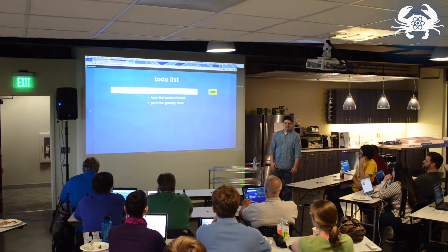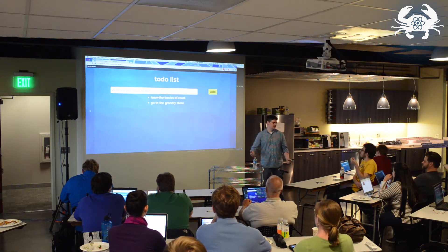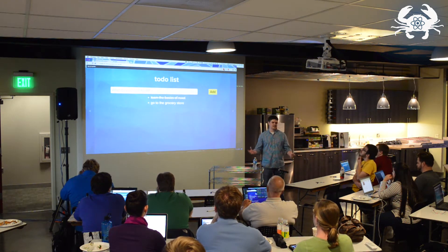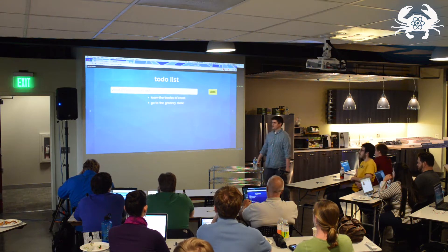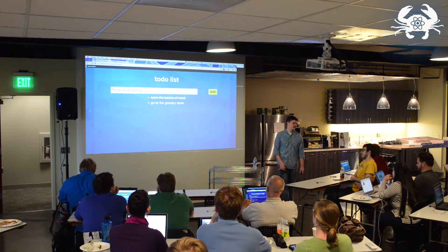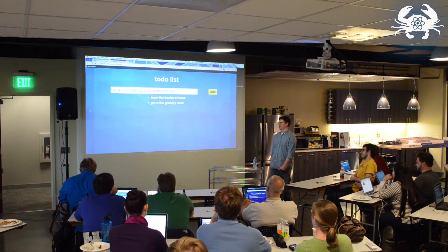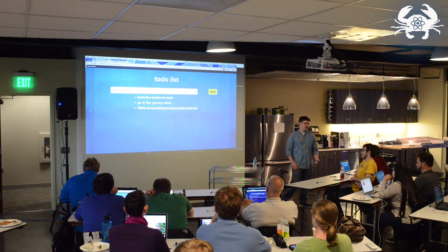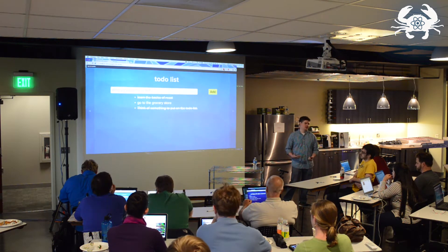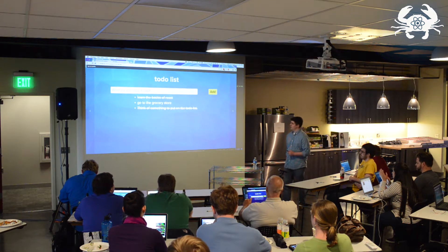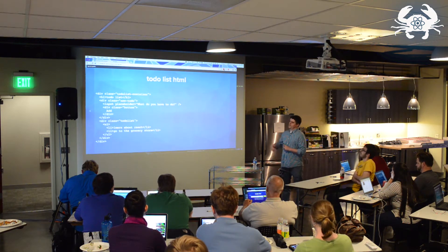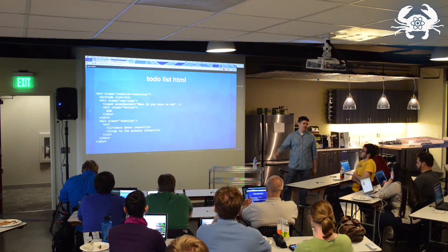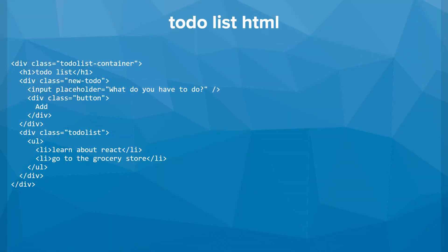So this to-do list component is something we'll consistently revisit throughout this session. It's a basic to-do list — you can add things to it, you can say that they're done. Everything you would want in a to-do list. We're going to slowly build this piece by piece and use that to show off some of the parts of React. If you were going to write this in HTML, JS, and CSS, this would be your standard HTML: a to-do list container, a header, an input, a button, and list items.